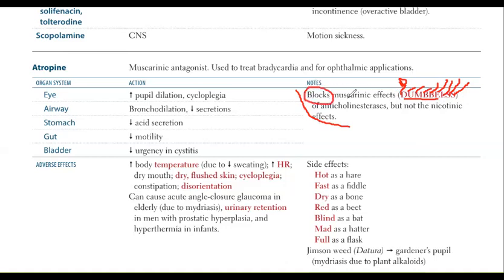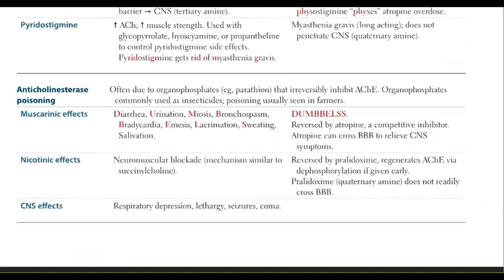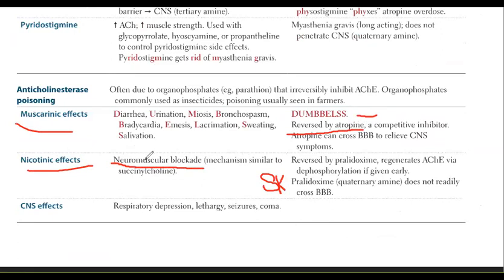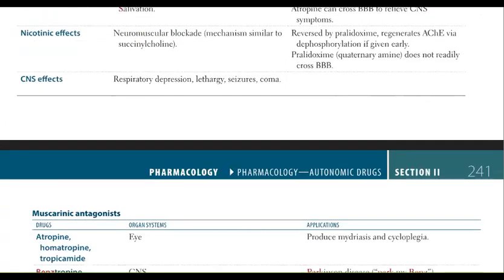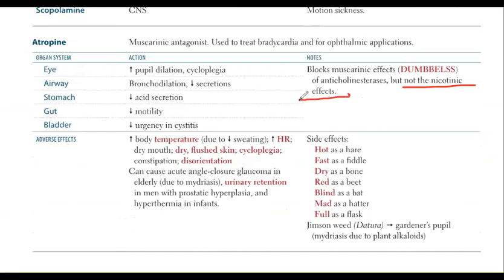Atropine will block all these muscarinic effects, but it will not block the nicotinic effect — this is important. It is only blocking the muscarinic effects. The nicotinic effects at the neuromuscular junction, on skeletal muscles, are blocked by pralidoxime. So atropine is an antidote, but it only blocks the muscarinic effects; it will not block the nicotinic effects.